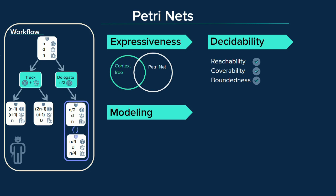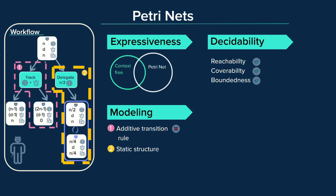However, there are two big limitations. One: the transition rule is additive, and therefore not well-suited for the search action. Two: the static structure of the net makes it harder or even impossible for the management of dynamic objects and recursivity, hence not compatible with the delegation action. Therefore, Petri nets were unfitting for his workflow.